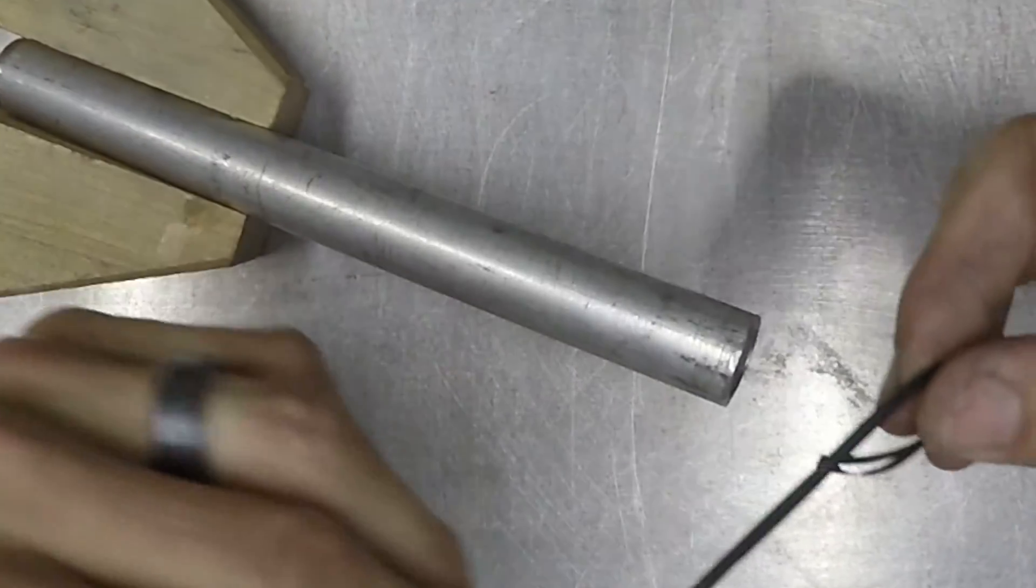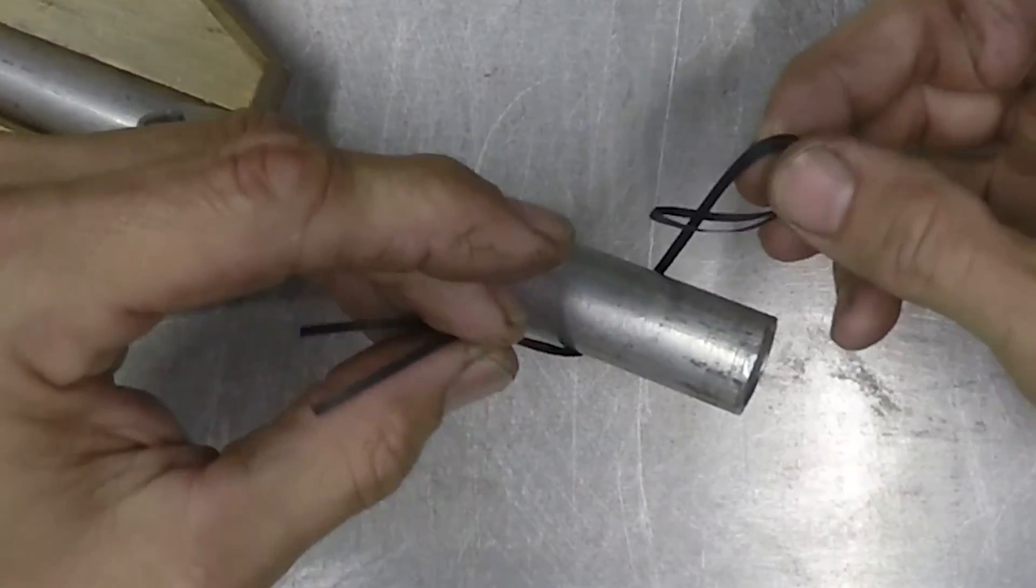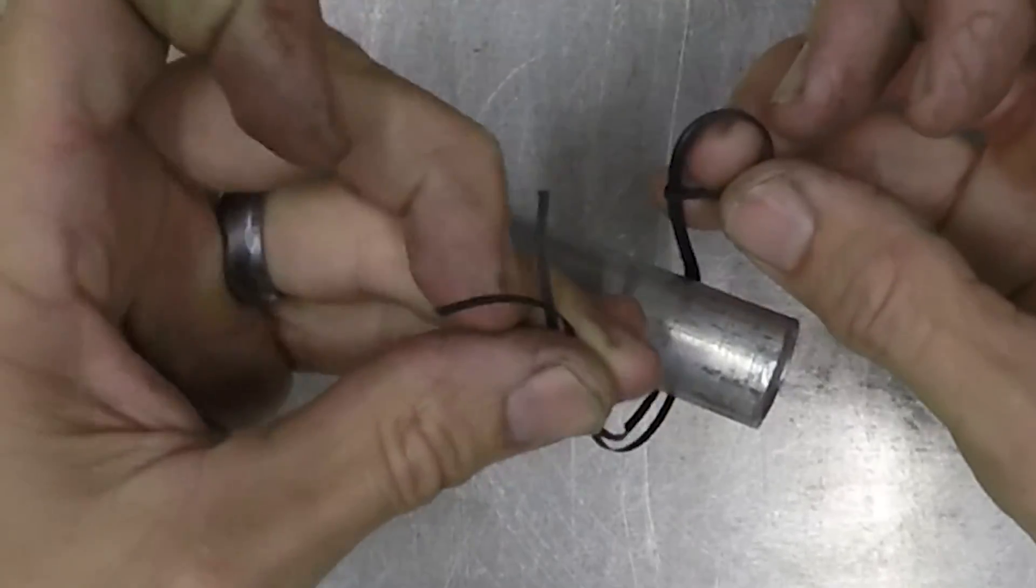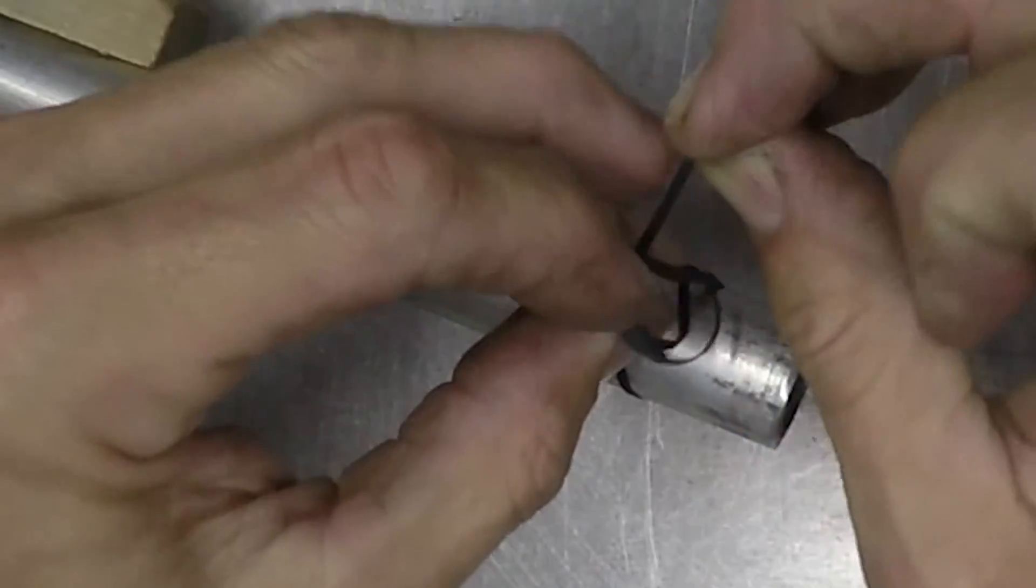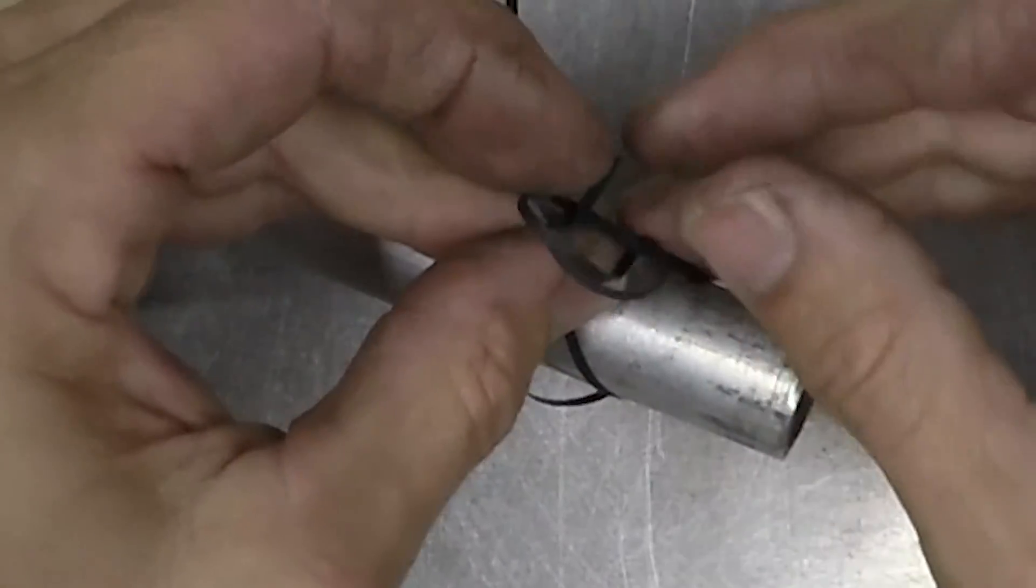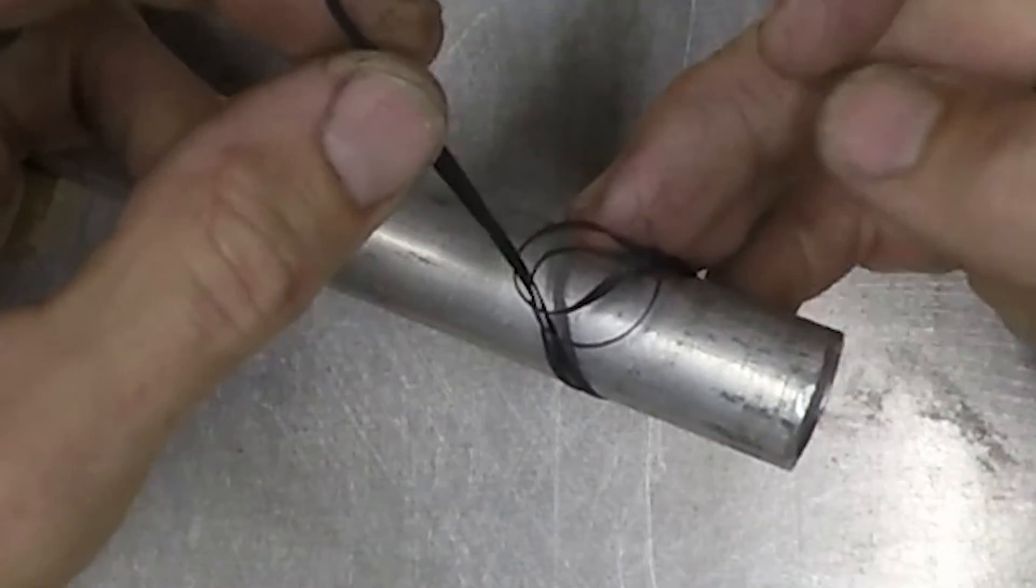What the objective is, is to put it around your piece. This is here just for demonstration purposes. Put it around your piece, feed the two ends through that loop you just made. You can't do that all perfectly, but there you go, see how it pulls there.